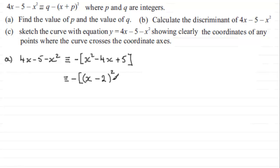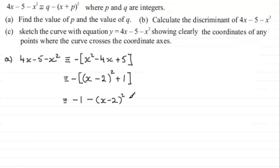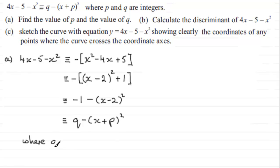We want plus 5, and we already have plus 4 from the squared term, so we just add 1 to bring it up to 5. Expanding back with the minus outside: we get minus 1 minus (x minus 2) all squared, which I'll write as minus 1 minus (x minus 2) squared. This is identical to the format q minus (x plus p) squared. So q equals minus 1 and p equals minus 2.